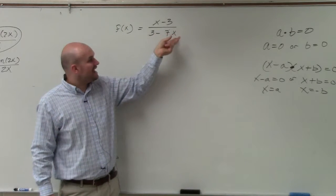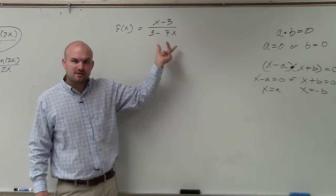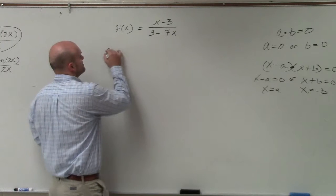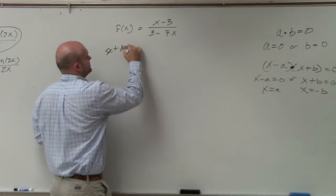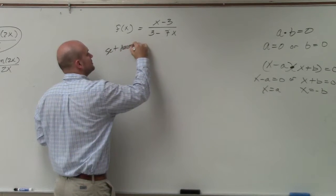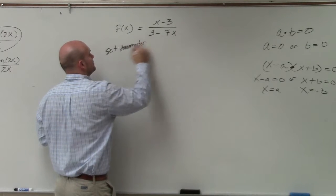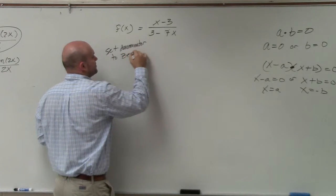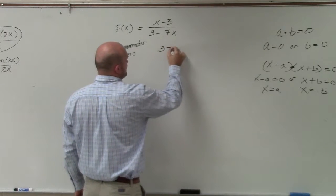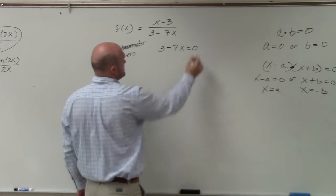So what values for x make my denominator equal to 0? Well, the easiest way to do that is to set your denominator to 0. So you do 3 minus 7x equals 0.